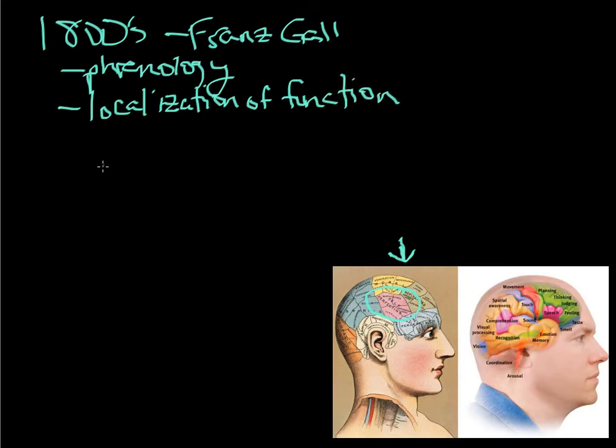But localization of function is really a key concept that we still actually have after Gall and his work with phrenology. So despite the fact that phrenology has completely gone the way of the dodo bird, so to speak, localization of function is a key concept.